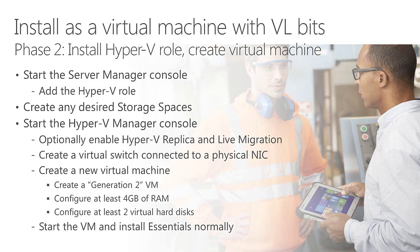Hyper-V Replica and Live Migration are two of the really big benefits of virtualizing your Essentials installation. Hyper-V Replica provides a very low-cost way to support business continuity scenarios, and Live Migration allows you to easily migrate your Windows Server Essentials instance to a new server when the current one is out of warranty — without reinstalling, taking the server offline, kicking users off, or making applications unavailable. You can simply live migrate across. After enabling those features, the next step is to create a virtual switch connected to a physical network adapter so your Essentials virtual machine can talk to the rest of the world.